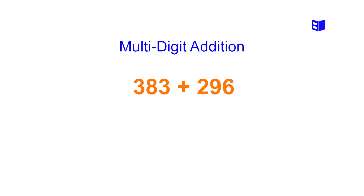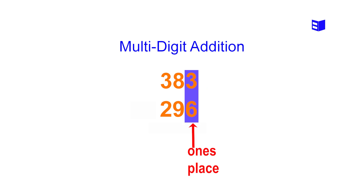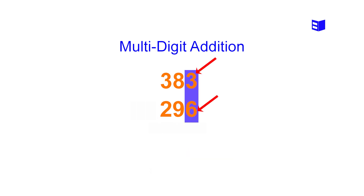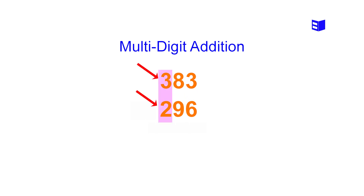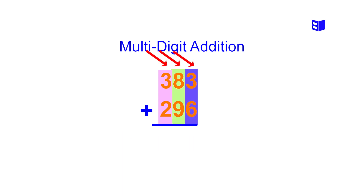Let's take another example: 383 plus 296. First, write the numbers on top of each other — ones in the same column, tens in the same column, and hundreds in the same column. The numbers 3 and 6 are in the ones column, 8 and 9 are in the tens column, and 3 and 2 are in the hundreds column. We place a plus sign to the left of 296 and draw a straight line below the numbers.